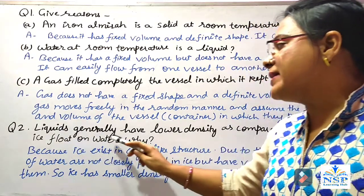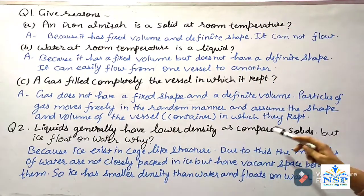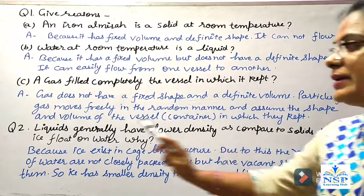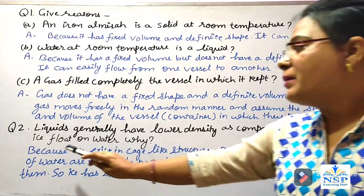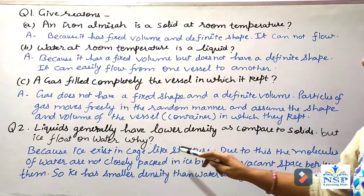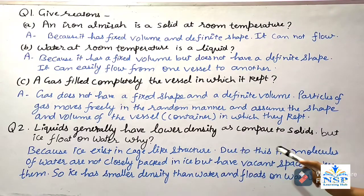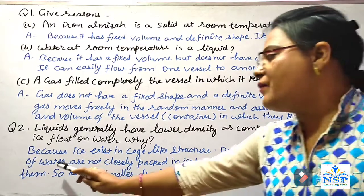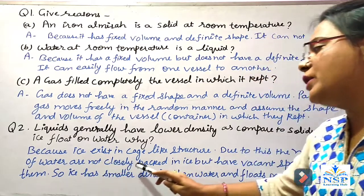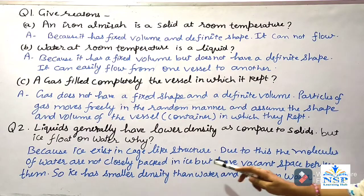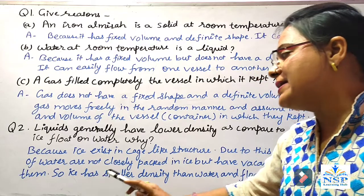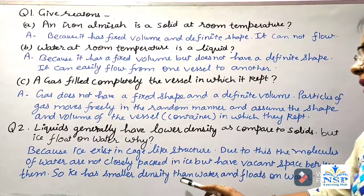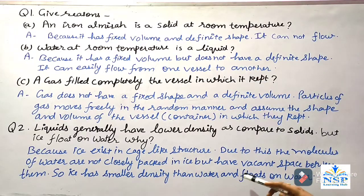Liquids generally have lower density compared to solids, but ice floats on water because ice exists in a cage-like structure. Due to this, the molecules of water are not closely packed in ice but have vacant space between them. So ice has smaller density than water and floats on the water surface.